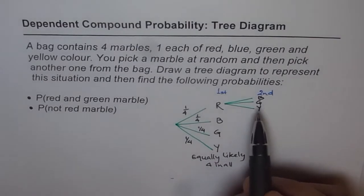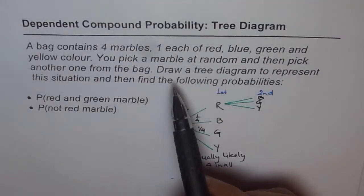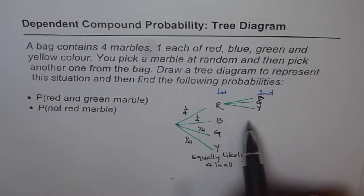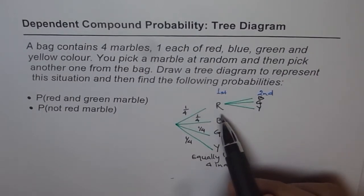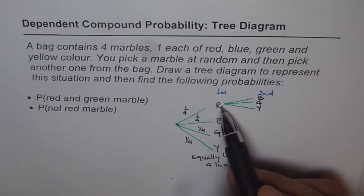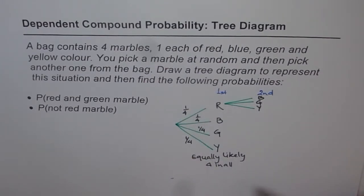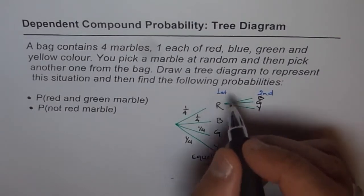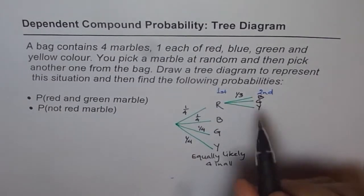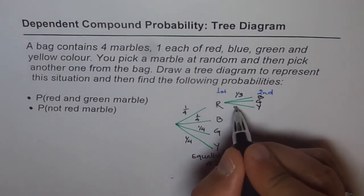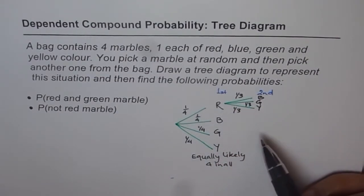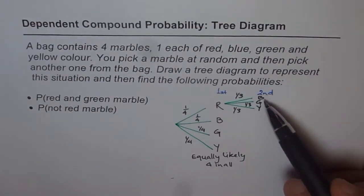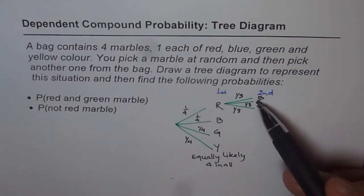Remember: since we have not replaced the marble, the things have changed. The outcome of the second draw is different from the first. Earlier we had four marbles; once you pick one, there are only three left. So now the probability of getting either one of them is one-third — one out of three for blue, one out of three for green, and one out of three for yellow. All are equally likely.